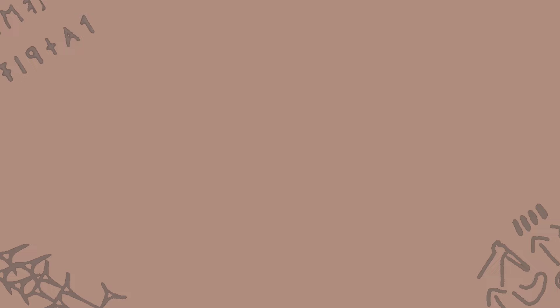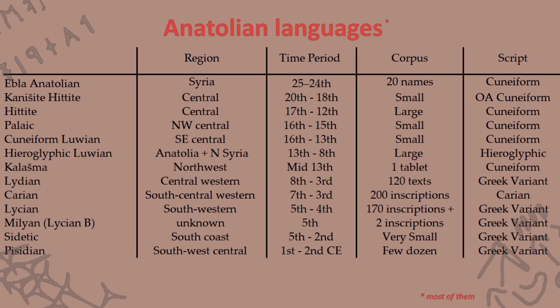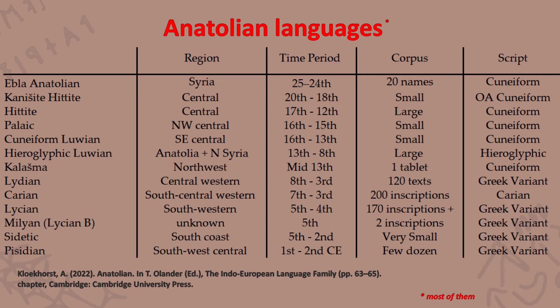Now, whilst the exact relationship between the Anatolian branch and Proto-Indo-European might be up for debate, the existence of the Anatolian branch is undeniable. But what actually makes up this branch? Take a look at the following table I have prepared using data from pages 63 to 65 by Kloekhorst in the following book.